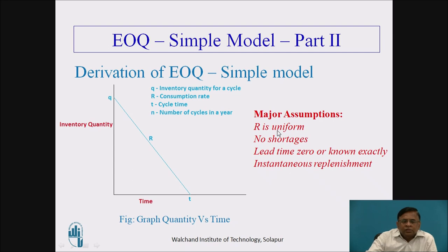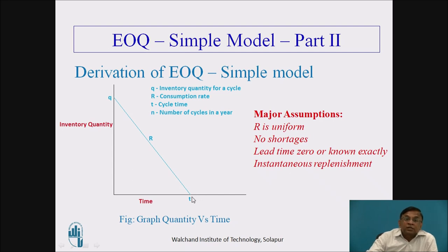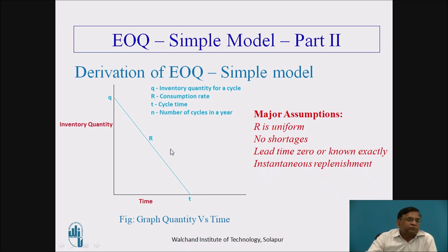The assumptions, just to revise again from the earlier video: R, the consumption rate, is assumed to be uniform. For example, if quantity Q is 300 for a cycle and time period T is 30 days for one month, then consumption rate R equals Q divided by T, that is 300 divided by 30, giving R equal to 10 units per day. This is what we assume — R to be uniform.